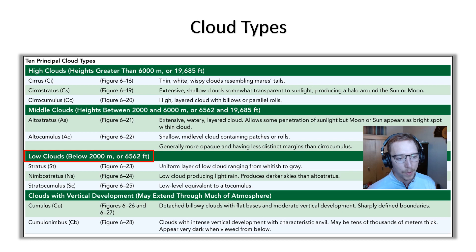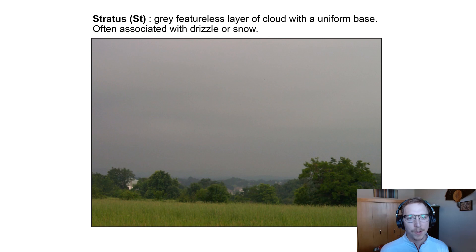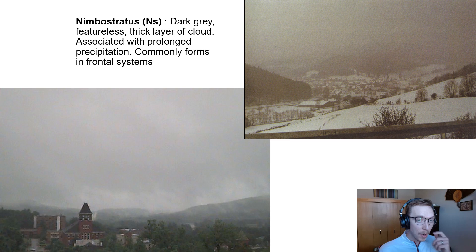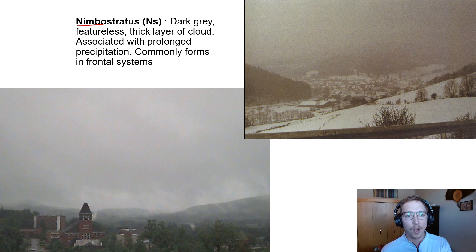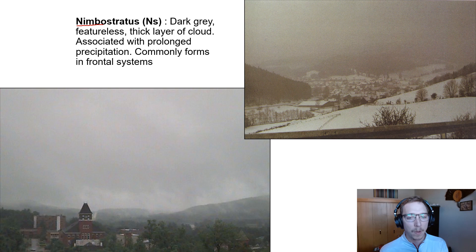Next we move into our low clouds: stratus, nimbostratus, and stratocumulus. Stratus clouds are gray, featureless layers with a uniform base — we associate these with light drizzle or snow. Nimbostratus are dark gray, featureless, thick layers — remember nimbus means violent rain — associated with prolonged precipitation commonly forming in frontal systems. Think of nimbostratus as your long-term drenchers: multi-day cloud cover with consistent, decent rainfall.